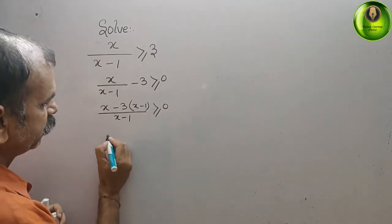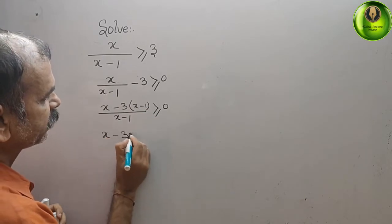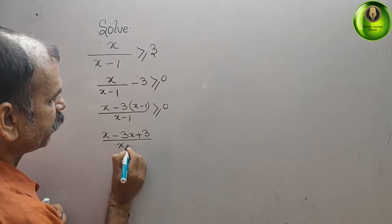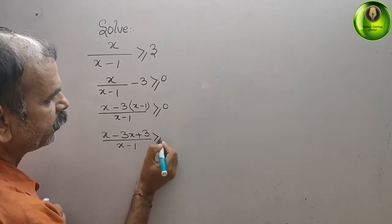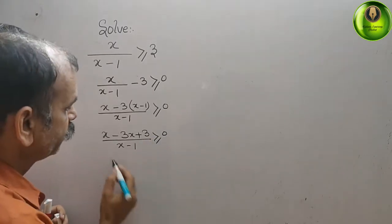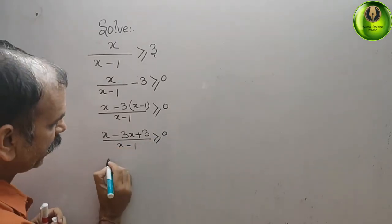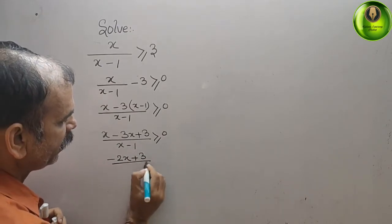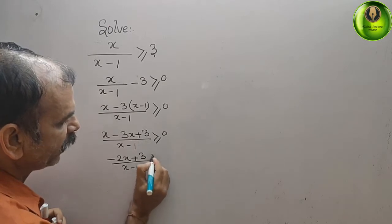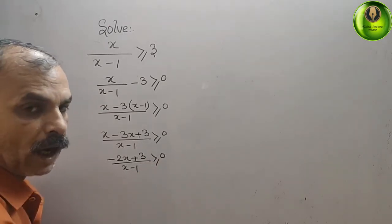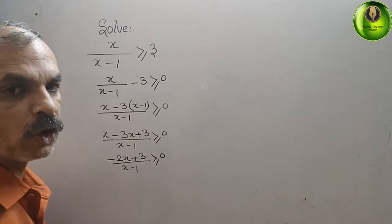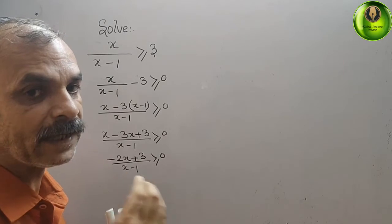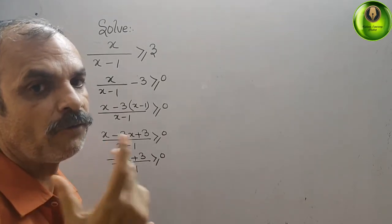Solving the numerator: x - 3x + 3 gives -2x + 3. So the expression becomes (-2x + 3)/(x-1) ≥ 0. Now we have to solve the numerator and denominator separately by setting each equal to 0 to get the values of x.